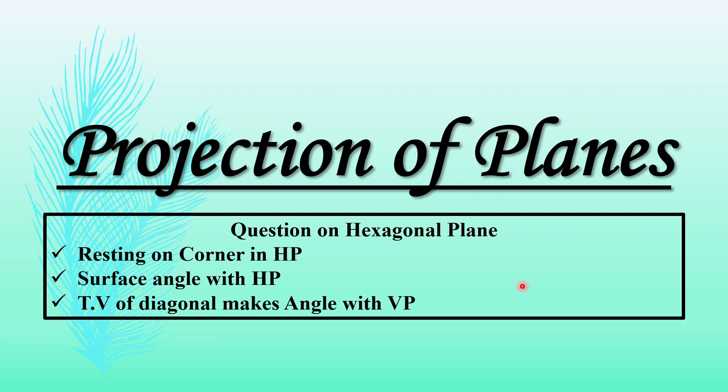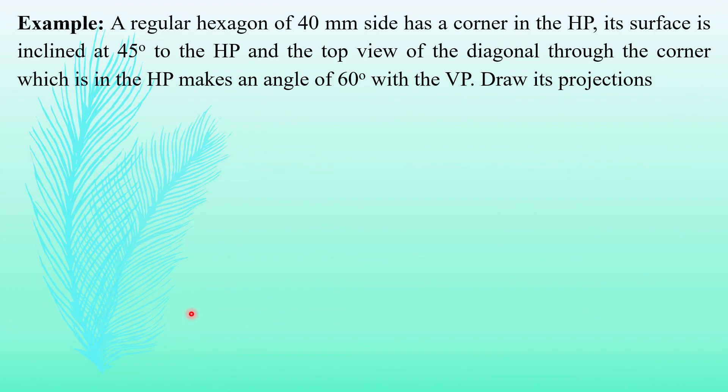In this video, we will look at a question given on a hexagonal plane in which the given data mentions the plane is resting on a corner in HP, the surface makes an angle with HP, and the top view of the diagonal through that corner makes an angle with VP. For better understanding, let us have this question which is from Badu Examination, July 2023.